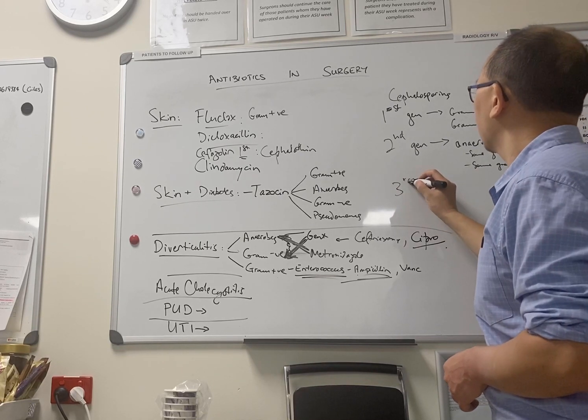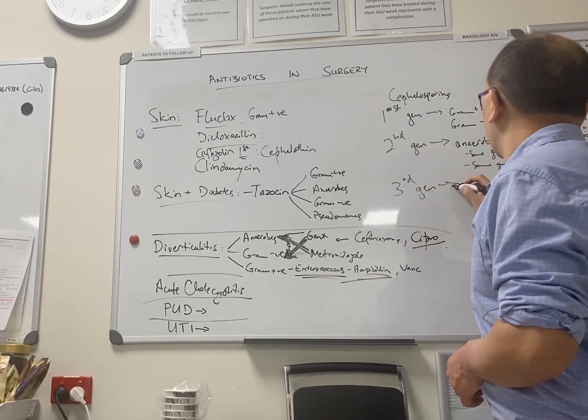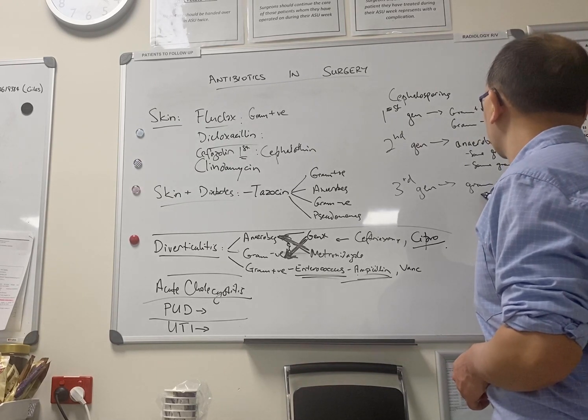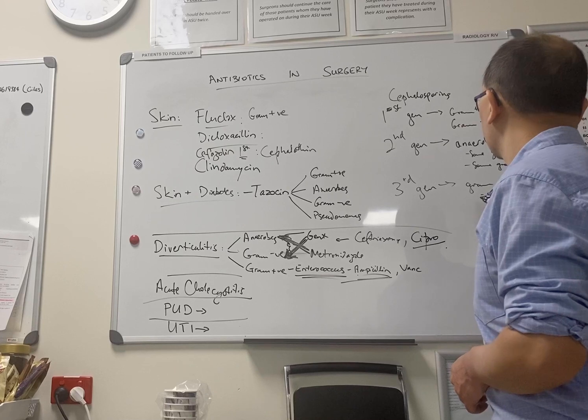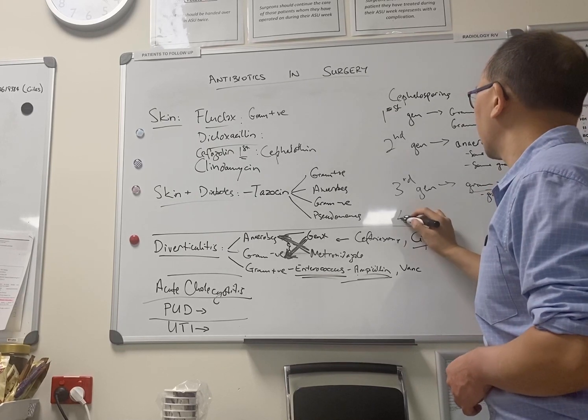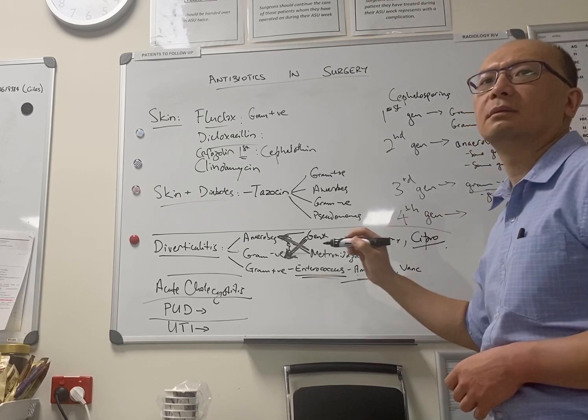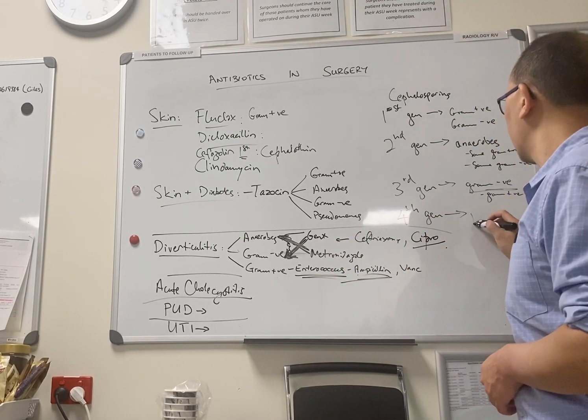What do third generation treat? Yeah, gram-negative. And they have a little bit of gram-positive cover but largely gram-negative. Fourth generation cephalosporins are extended spectrum to cover pseudomonas.